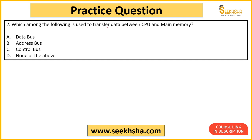Next question: which among the following is used to transfer data between CPU and main memory? The components use different buses for data transfer. If you have to transfer data between the CPU and main memory, which bus is used? Options are: Data Bus, Address Bus, Control Bus, or None of the above. The answer is option B — Address Bus. CPU and main memory data transfer uses the address bus.